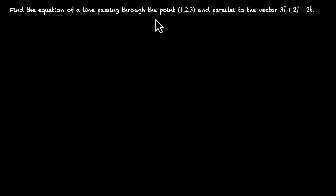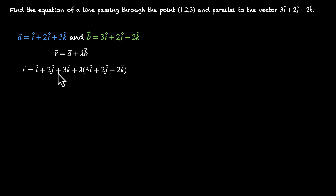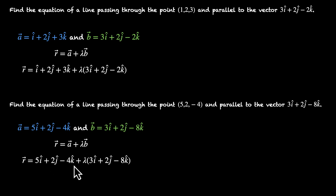Now let's practice. Find the equation of a line passing through the point (1, 2, 3) and parallel to the vector 3i cap plus 2j cap minus 2k cap. The position vector A is i cap plus 2j cap plus 3k cap. The parallel vector B is 3i plus 2j minus 2k. So the equation is R vector equals A vector plus Lambda B vector. We don't need to rearrange — this is the equation of the line passing through this point and parallel to this vector.